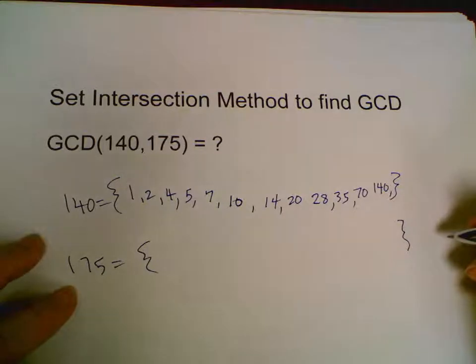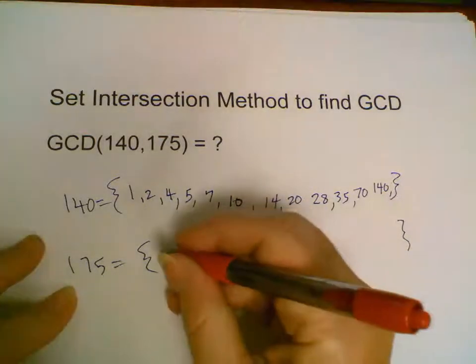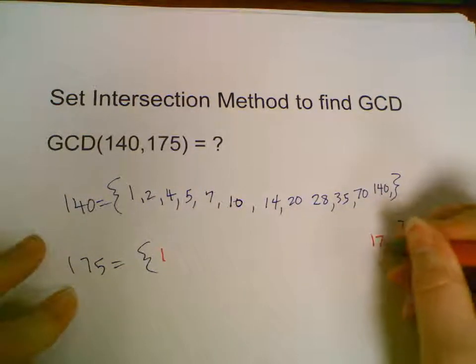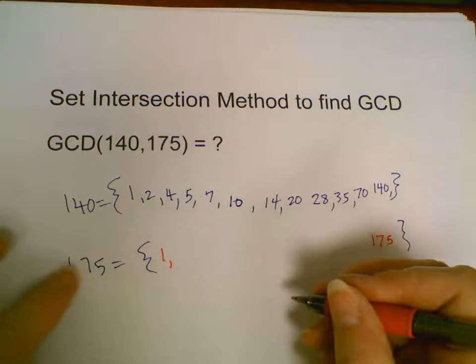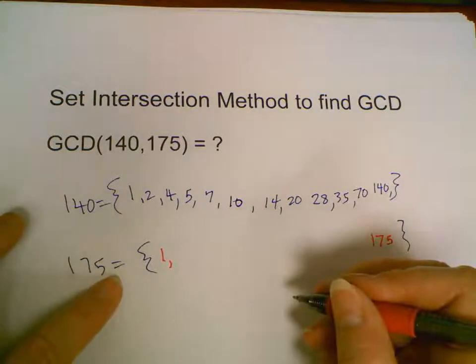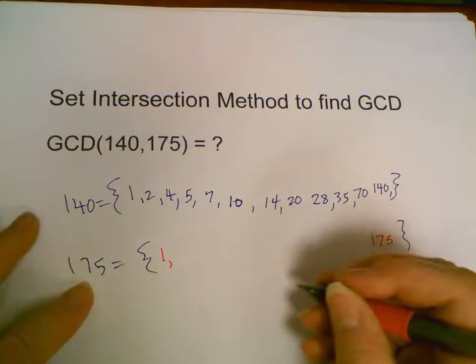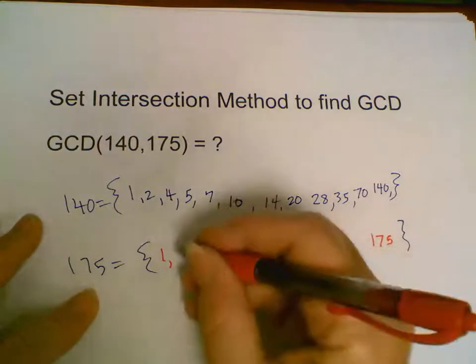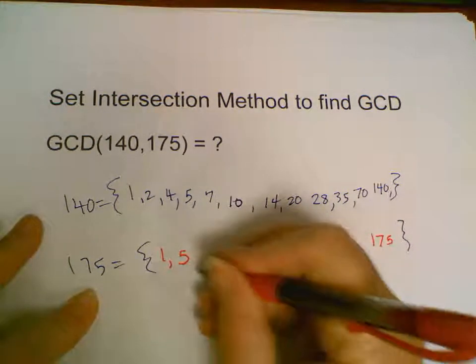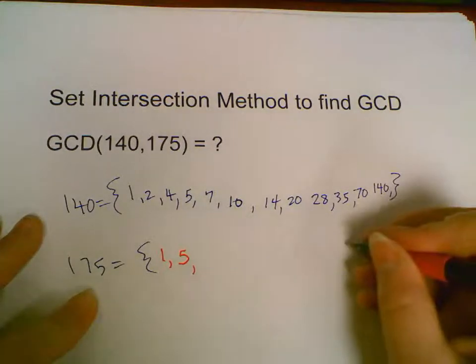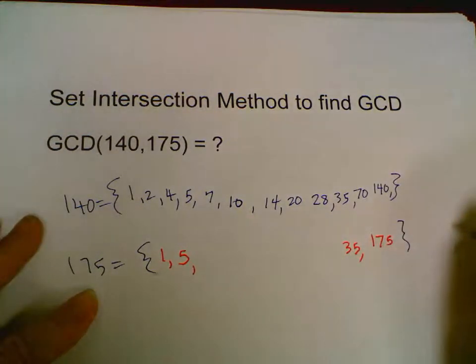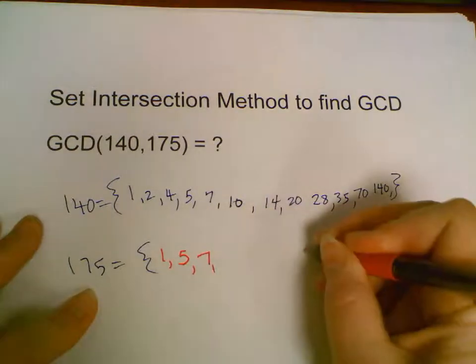175 has divisors and I'll go a lot faster. 1 times 175, it's not even so 2 doesn't work. 1 plus 7 plus 5 is 13, that's not divisible by 3, so 3 doesn't work. 4 doesn't work, but 5 times 35 is 175.